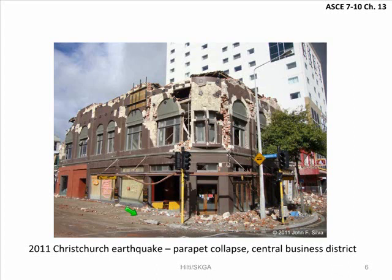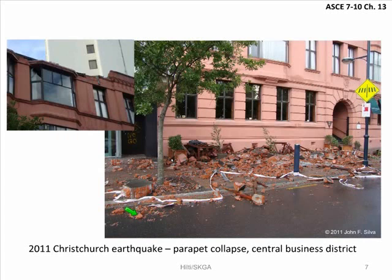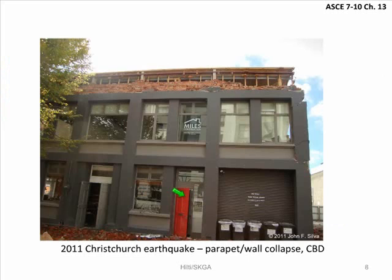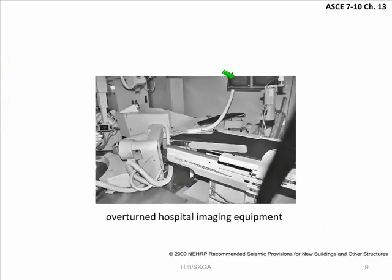They had retrofitted a lot of the buildings in Christchurch, but nevertheless they had a lot of this type of damage. This brick was dislodged from the top of this building, and again you can see the classic case where the roof diaphragm actually acts as a battering ram to drive this material off the top of the building. Parapet damage gets a special focus in ASCE 7 — it gets special mention right up front in Chapter 13, and that's why.